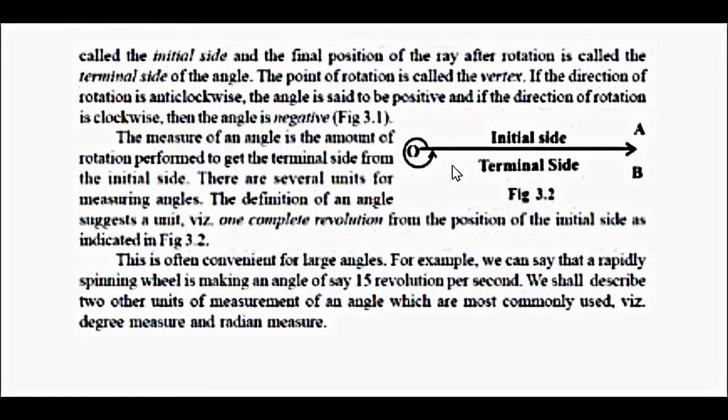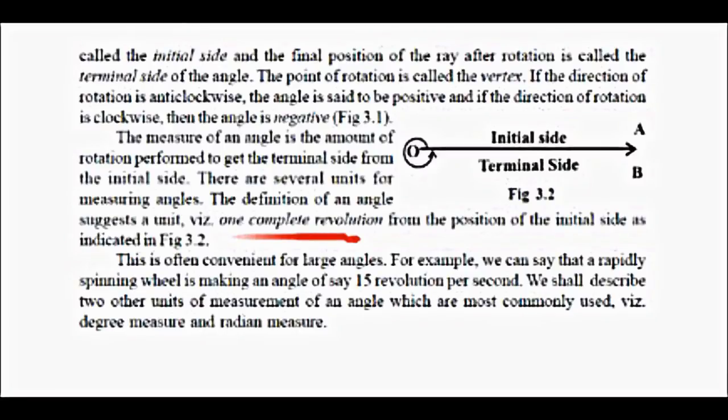When we have an initial side and we start from the initial side and come back to the terminal side, we say that this is the complete revolution. The complete rotation gives rise to the initial side being equal to the terminal side. You might have observed a car or a cycle tire: it revolves number of times and we can measure how much rotation or how many revolutions it has taken place. These are the basic building blocks of our discussion.